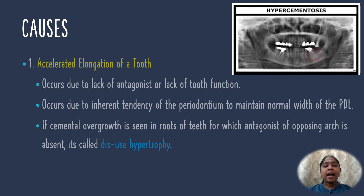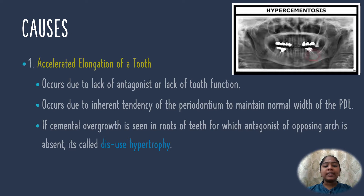One cause is accelerated elongation of a tooth. It occurs due to the lack of an antagonist or lack of tooth function, and due to the inherent tendency of the periodontium to maintain the normal width of the periodontal ligament. If cemental overgrowth is seen in roots of teeth for which the antagonist of the opposing arch is absent, it is known as disuse hypertrophy.